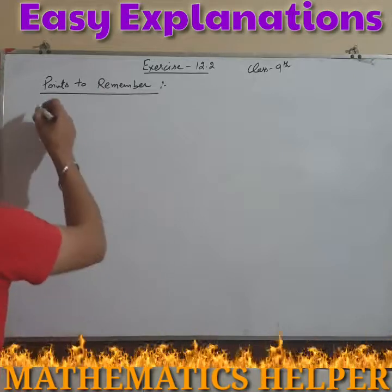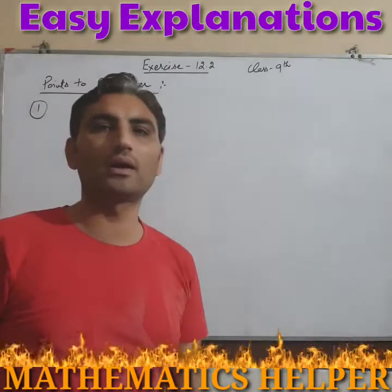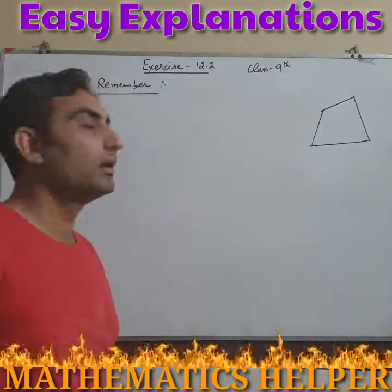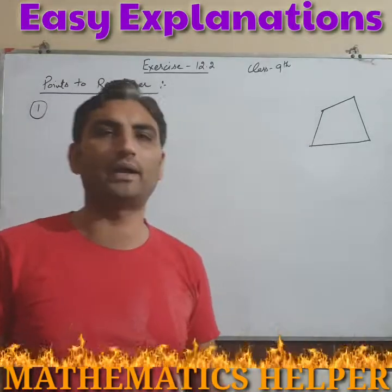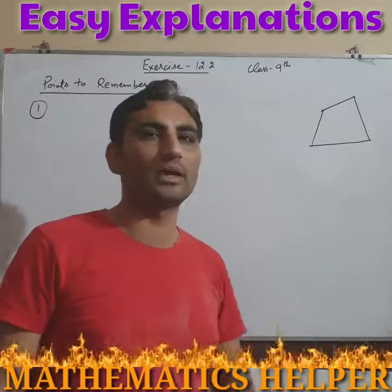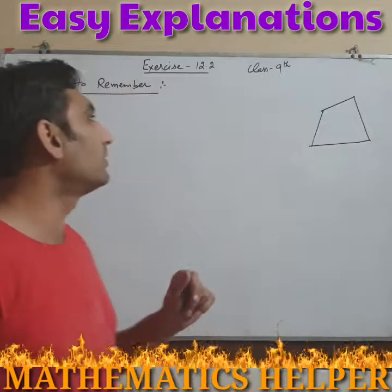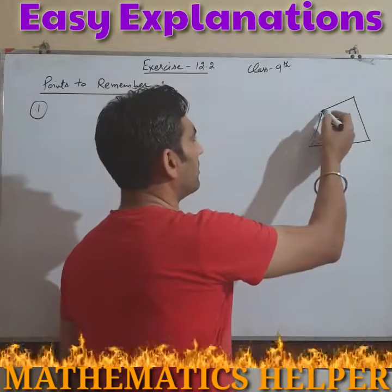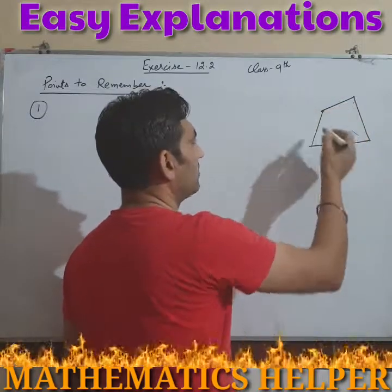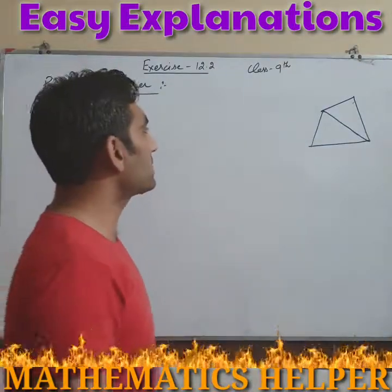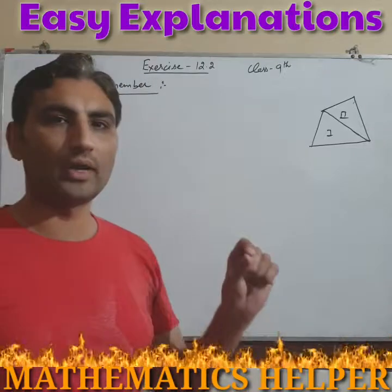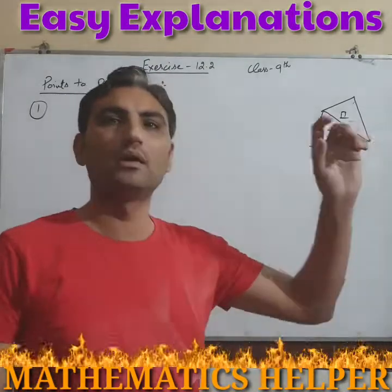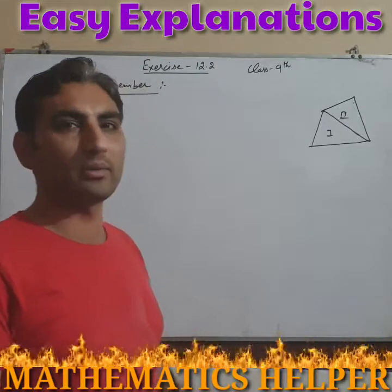First point: if you have a quadrilateral — a figure having four sides — and there is a question to find its area, a direct area formula for any quadrilateral is not provided in this exercise. However, if we draw one diagonal, it divides the quadrilateral into two triangular shapes, and the total area will be the sum of the areas of those two triangles.